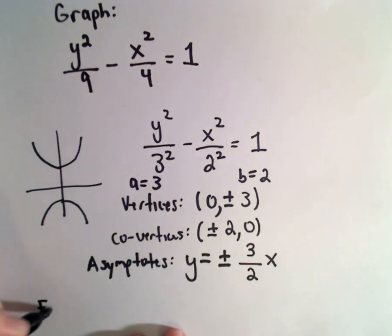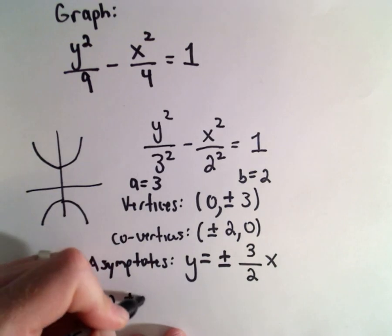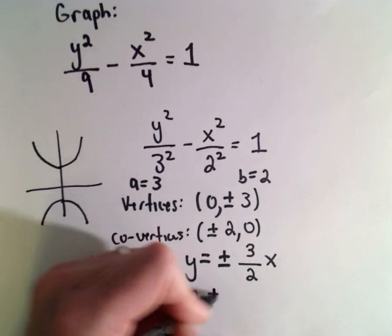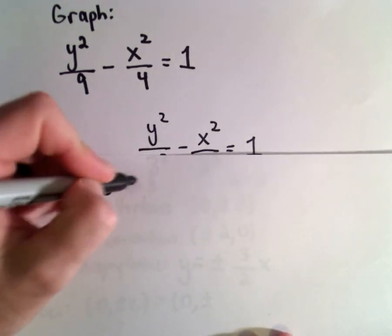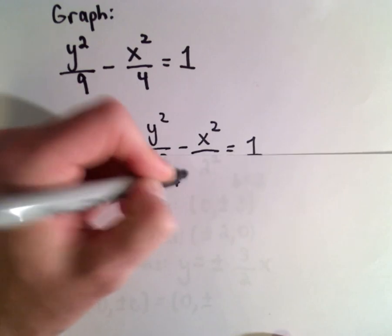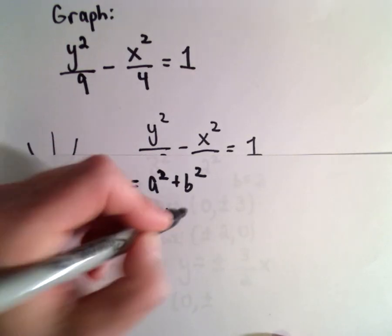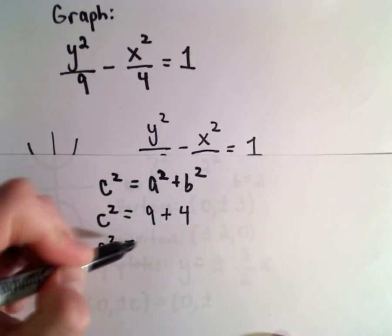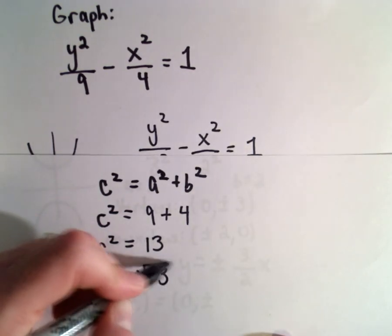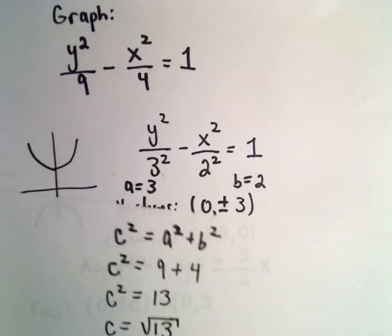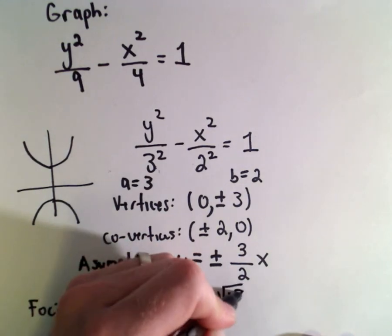If you also want to find the foci, the foci occur at (0, ±c). Recall to get the c value, we have the relationship that c² equals a² plus b². Well, a² is 9 and b² is 4, so c² will equal 13. We can take the square root of both sides, keeping the positive solution, and we'll get c equals the square root of 13.